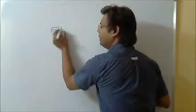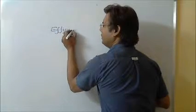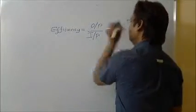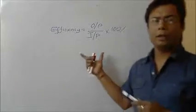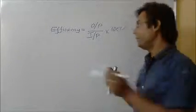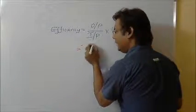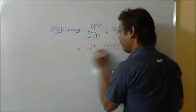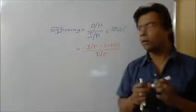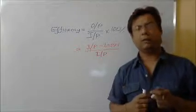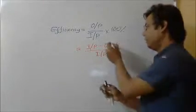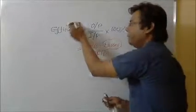For transformers, we can say efficiency equals input minus losses upon input. Why this formula? Because it's very possible my output is not constant, but my input is constant. I can have the losses, I know the input, so I can find the efficiency.